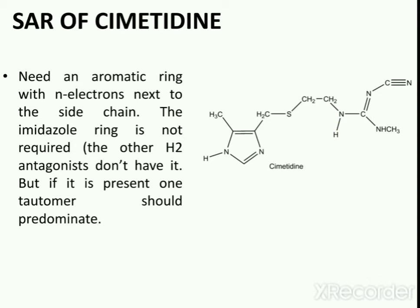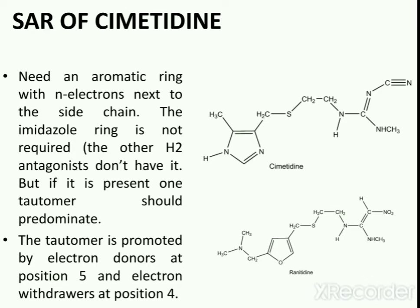Now we will discuss the structure-activity relationship of cimetidine. For any compound to be an H2 antagonist, it should contain an aromatic ring system with pi electrons next to the side chain. The presence of the heterocyclic imidazole ring is not strictly required — in cimetidine there is an aromatic heterocyclic ring system, but in ranitidine there is a furan ring system, meaning the imidazole ring is not a necessity.